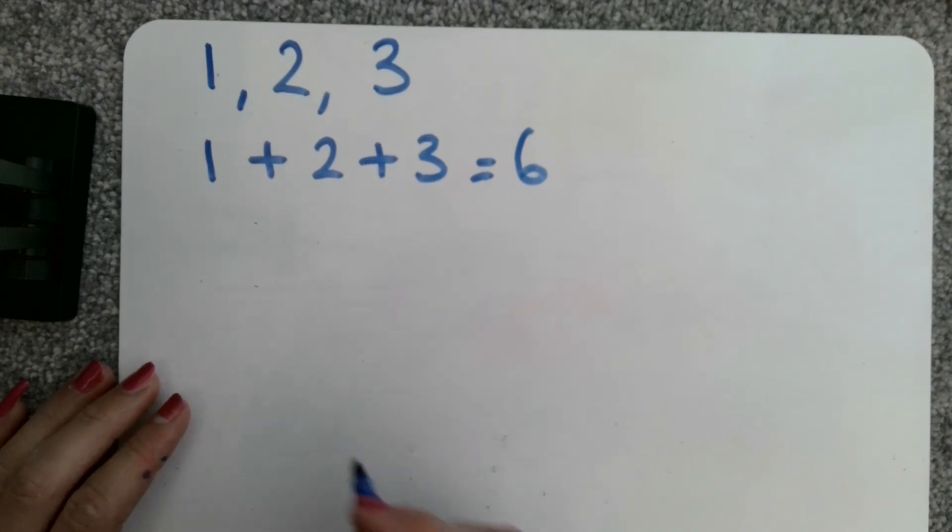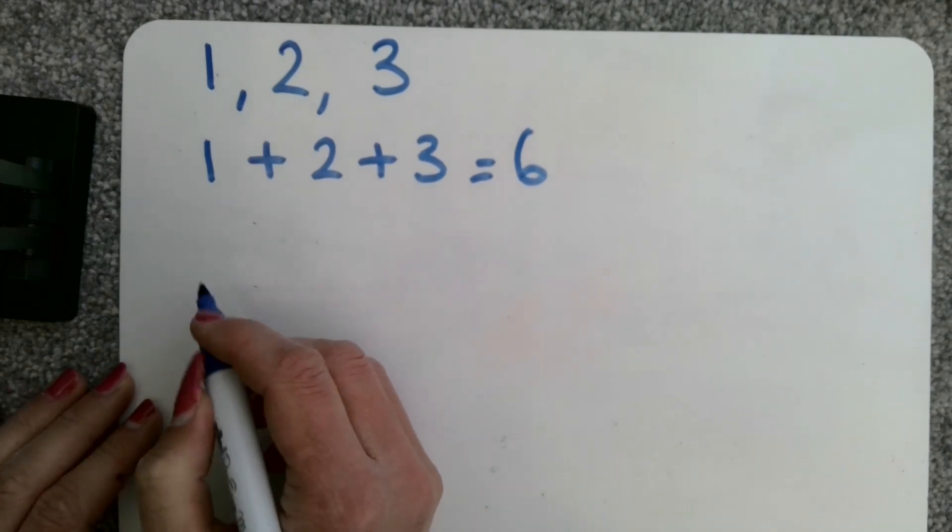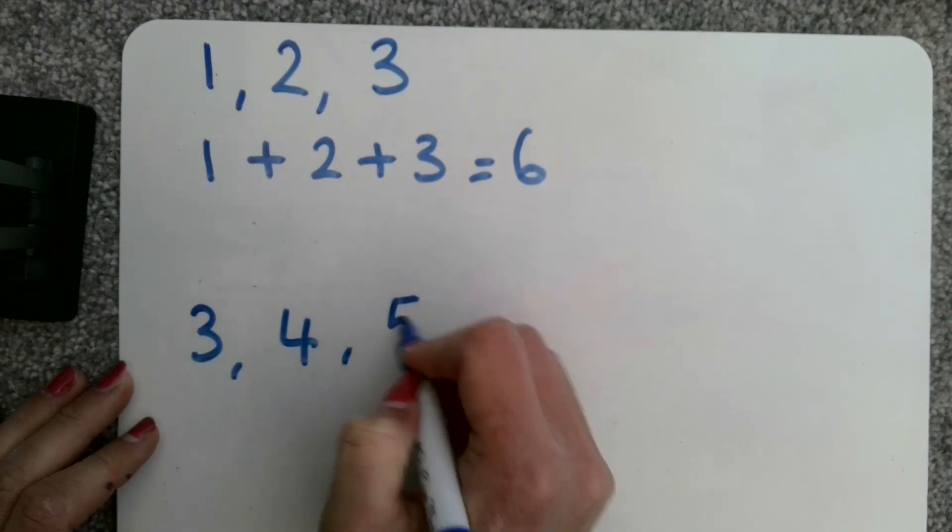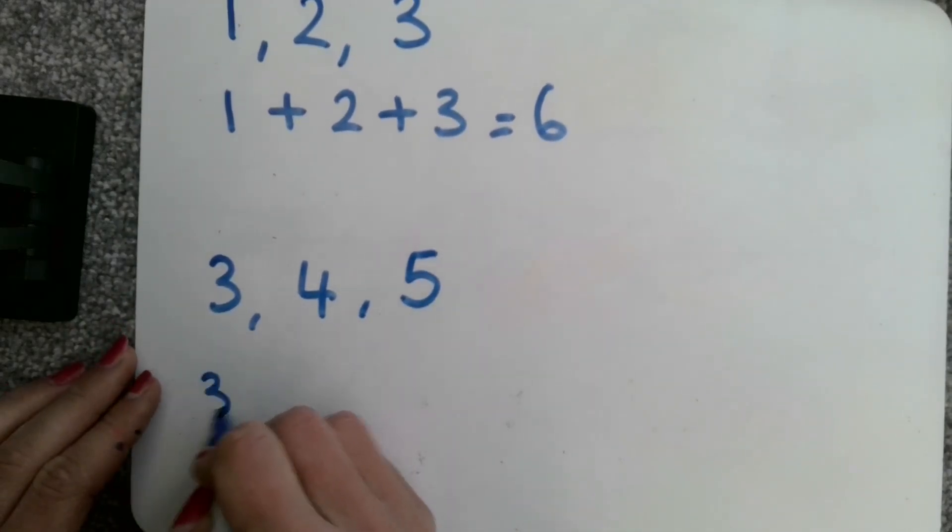It then said to have another go. So, I then chose three, four, and five. Add them up again.